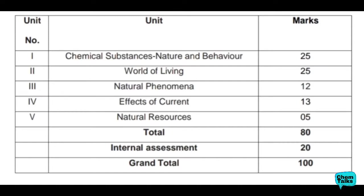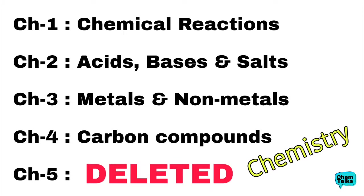If we mention the chapters in each unit — the first unit, Chemical Substances, covers four chapters: Chapter 1 Chemical Reactions, Chapter 2 Acids Bases and Salts, Chapter 3 Metals and Non-metals, and Chapter 4 Carbon Compounds. Chapter 5, Periodic Classification of Elements, was also chemistry but as per the CBSE syllabus for this session, this chapter is deleted. So we do not need to study it.